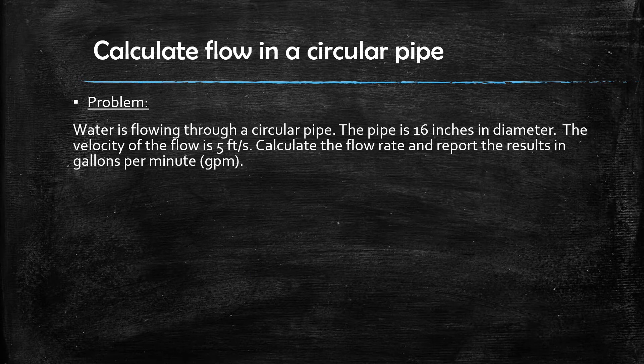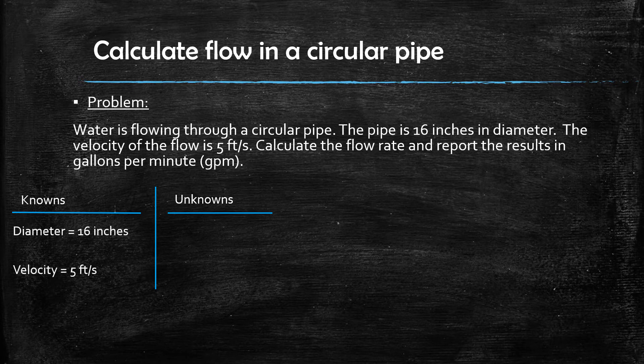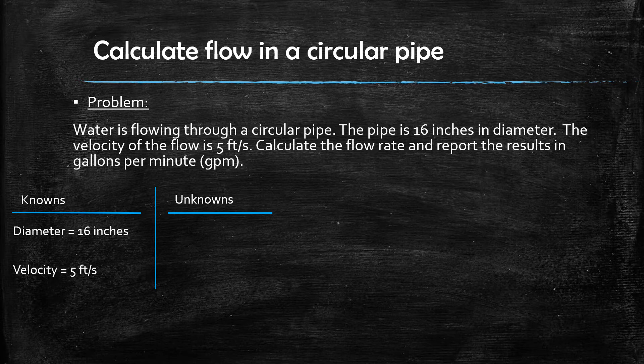The very first step we want to take in solving the problem is to list out all of the knowns and unknowns given in the problem statement. For this problem we have been given that the diameter of the pipe is 16 inches and the velocity of the flow is 5 feet per second. The unknown is the flow rate.